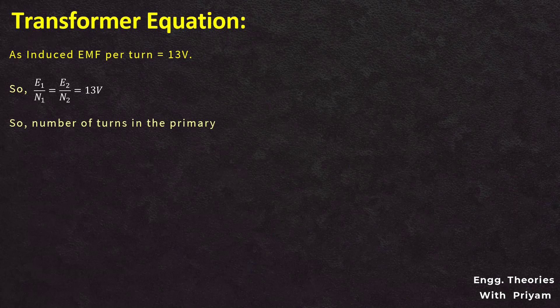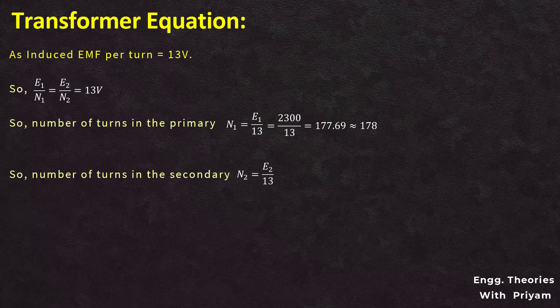From this we can determine the number of turns in primary and secondary. The number of turns in primary N1 equals E1 divided by the induced EMF per turn: 2310 divided by 13, which results in 177.69, or approximately 178 turns. The number of turns in secondary N2 equals E2 divided by 13, which is 220 divided by 13, resulting in approximately 17 turns.